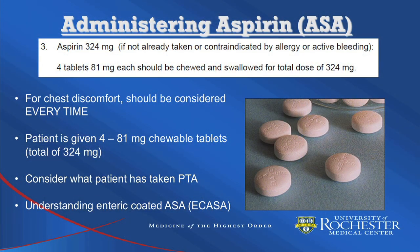In addition to nitroglycerin, patients having chest pain or with threatened myocardial infarction will also benefit from aspirin. For patients with chest discomfort, aspirin should be considered every time. The goal is to get the patient a total of 324 mg, which is generally accomplished by giving four 81 mg chewable tablets. Consider what the patient has already taken. If the patient has already taken 324 mg of aspirin prior to arrival, no additional dose is necessary. However, if the patient has only taken one 81 mg chewable aspirin, give the additional three tablets so the patient receives a total dose of 324 mg.